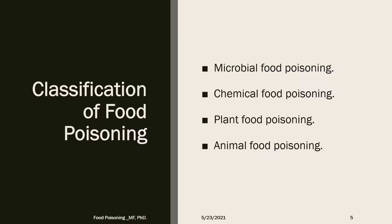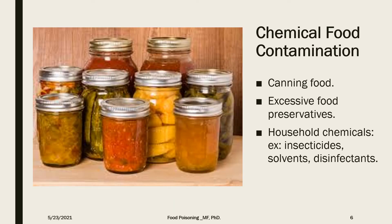For the classifications of food poisoning, it starts with microbial food poisoning, chemical food poisoning, plant food poisoning, and animal food poisoning. Chemical food poisoning includes any materials added to food that cause toxicity, such as insecticides, solvents, and food additives.